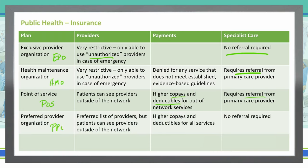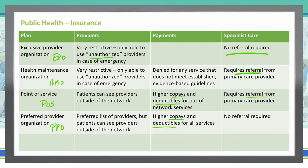A Preferred Provider Organization, also known as a PPO, gives you a list of providers preferred by that particular insurance plan. You can, however, see providers outside of the network. Like the POS, that means you will have higher co-pays and higher deductibles for out-of-network services. But a key benefit is you do not need a referral — so if you want to see a dermatologist for a skin condition, you don't have to first see a primary care provider to get a referral.